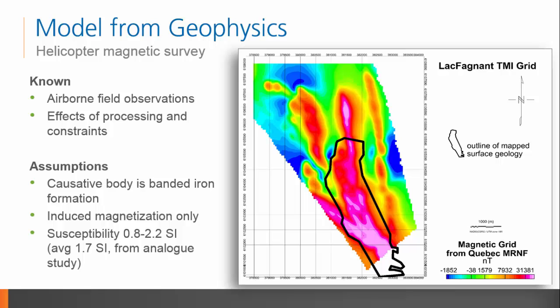Additionally, we can postulate that the iron formation has induced magnetization only. This may not be the case and should be vetted through additional modeling, but it will serve as an initial hypothesis. Lastly, analog studies of similar iron formations indicate that an acceptable range of susceptibilities within the iron formation is between 0.8 and 2.2 SI, with an average of 1.7 SI.